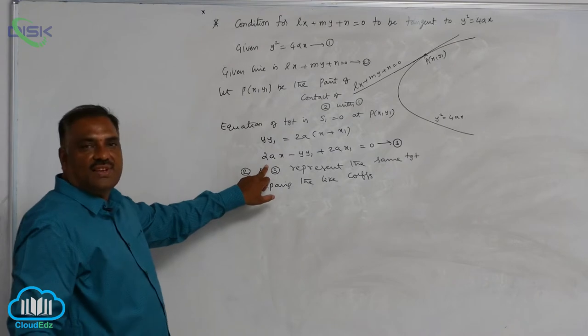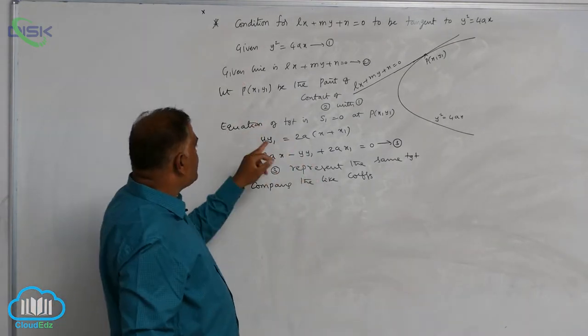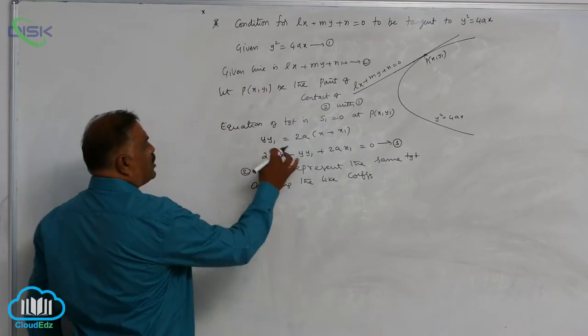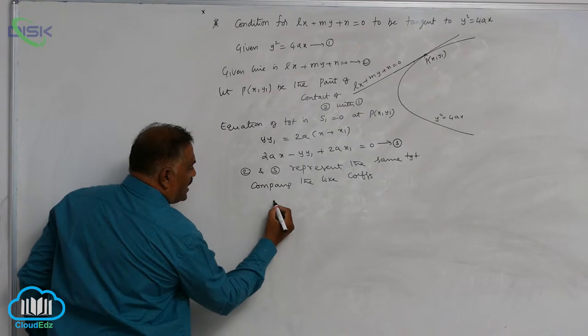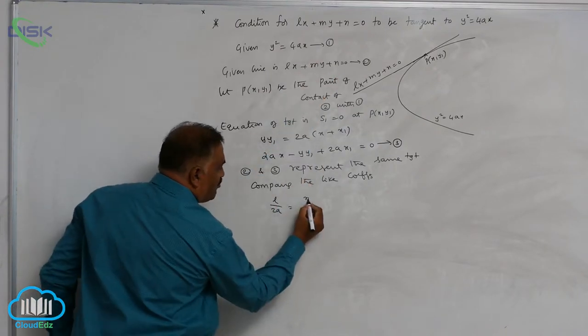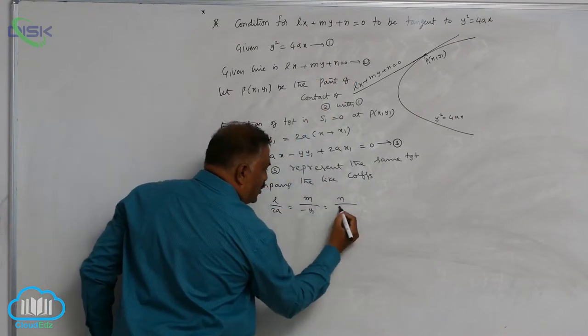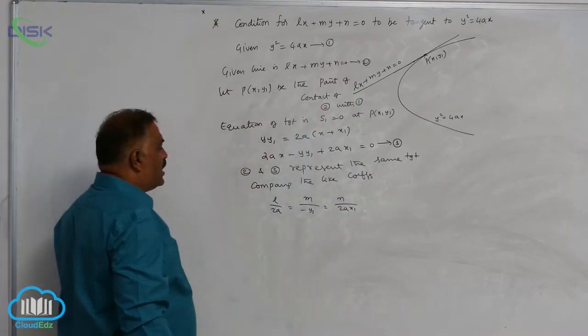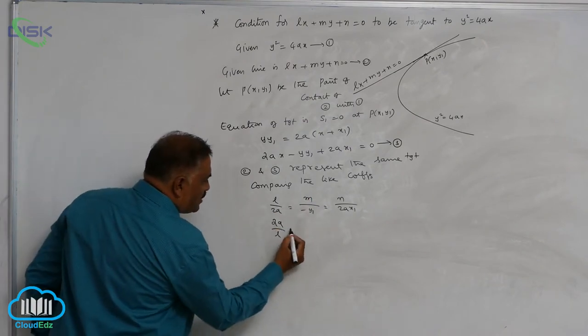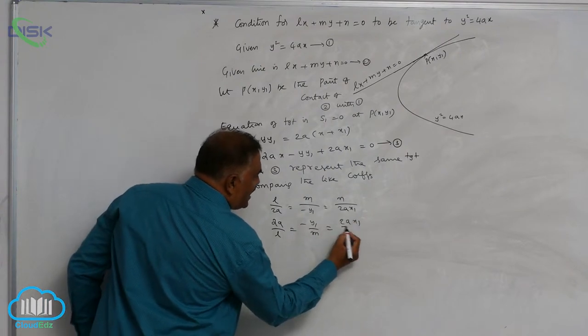You see the coefficient of x is 2A and in the previous one is L. So, comparing: L by 2A is equal to M by minus y1, which is equal to N by 2Ax1. Taking the reverse: 2A by L is equal to minus y1 by M, which is equal to 2Ax1 by N.